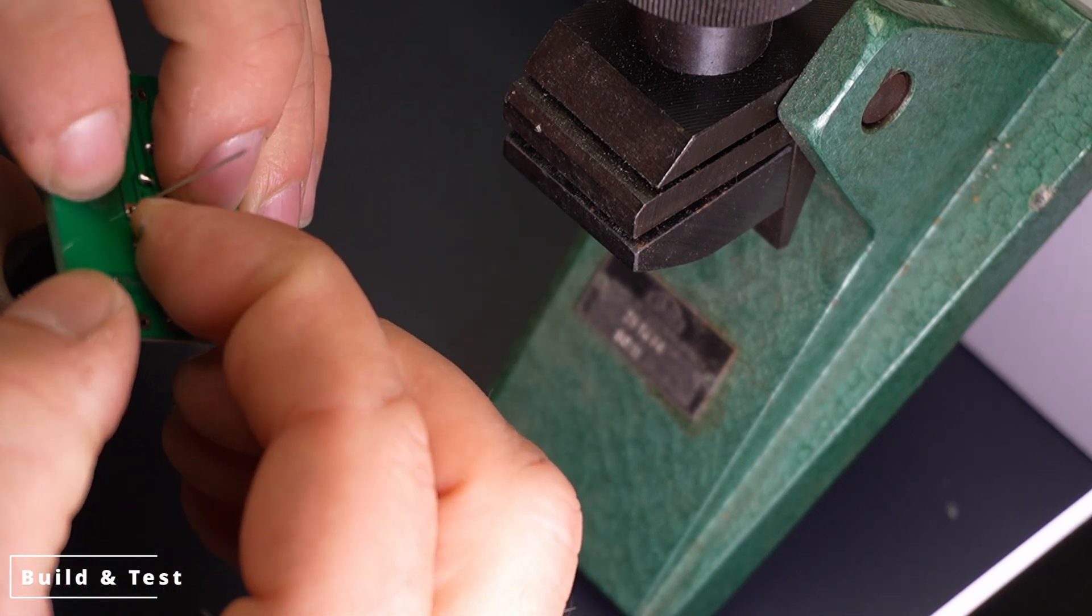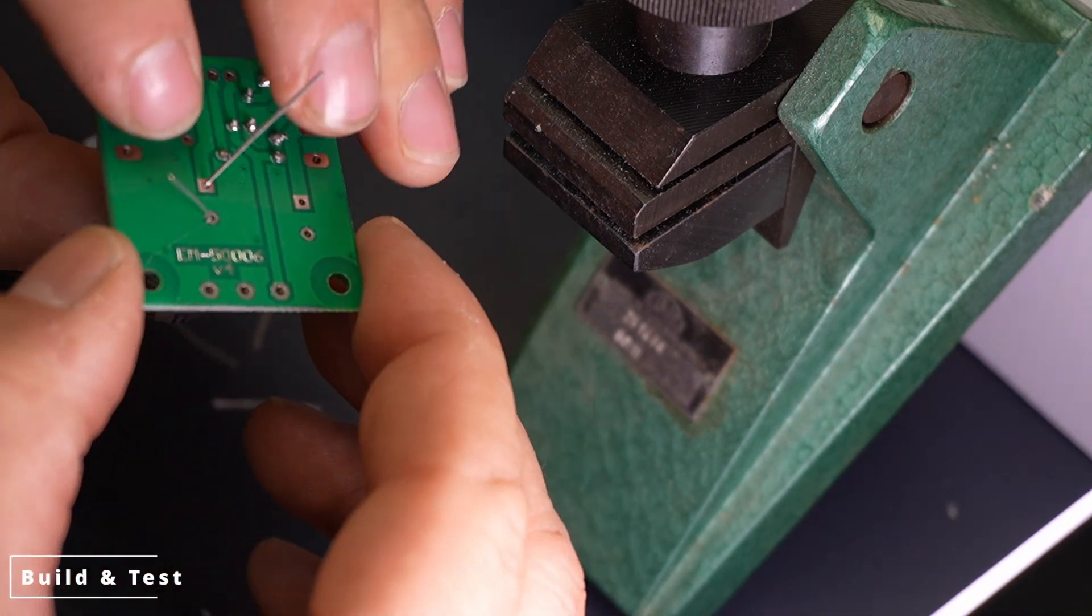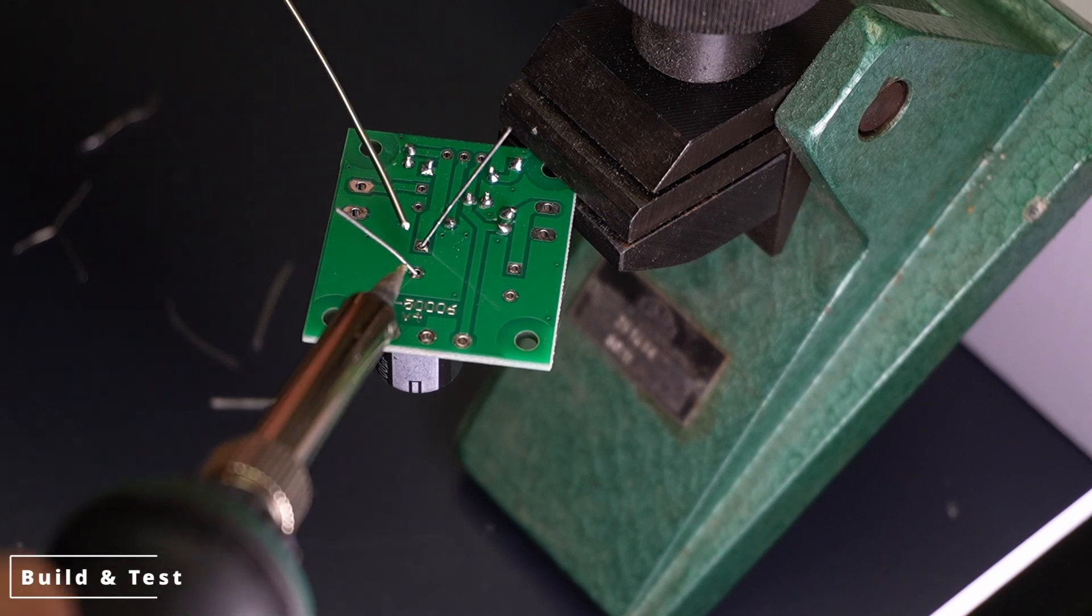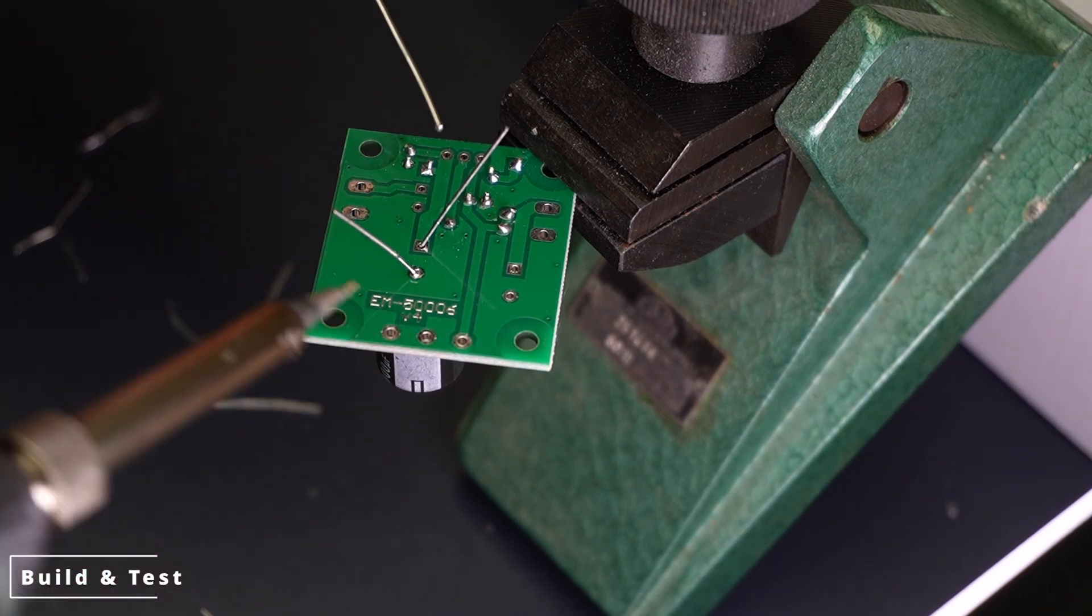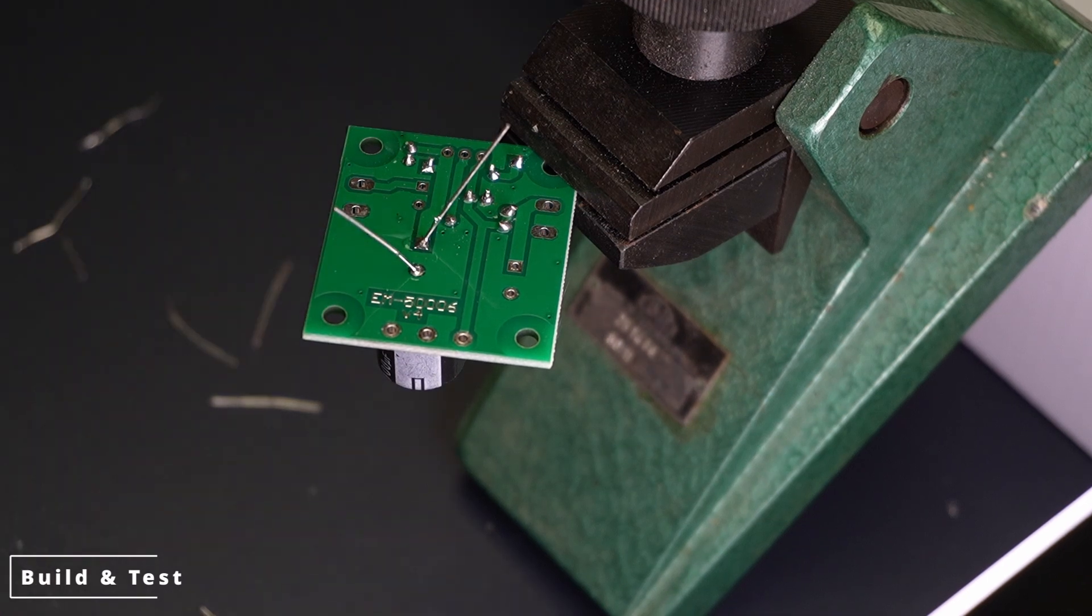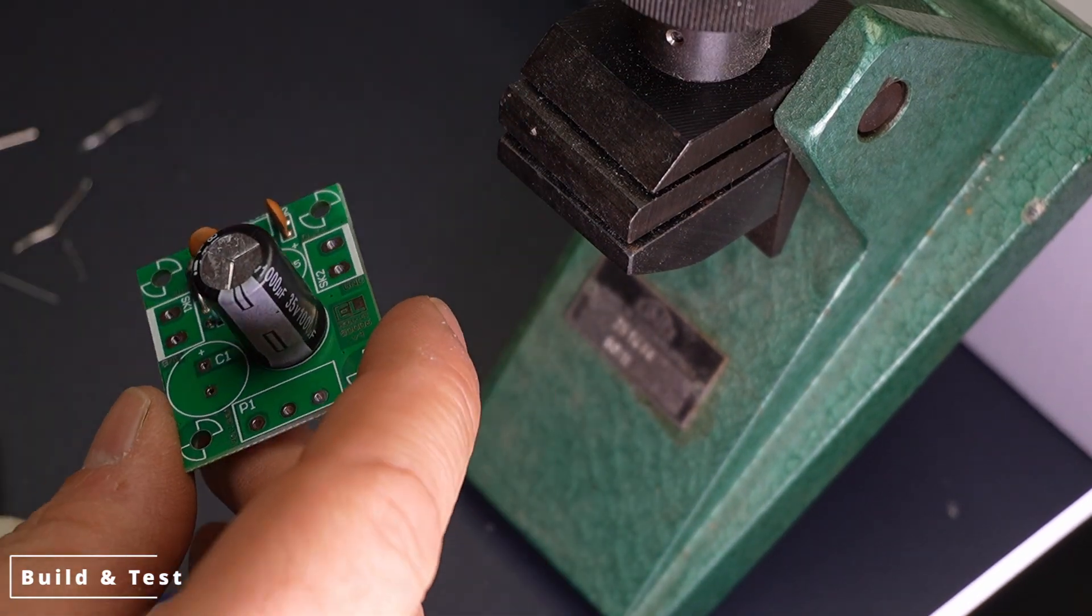Soldering the capacitors. Capacitors must also be inserted with the correct polarity, especially electrolytic capacitors. The longer lead indicates the positive terminal. Once in place, proceed as with the previous components. Solder, then trim the excess leads.